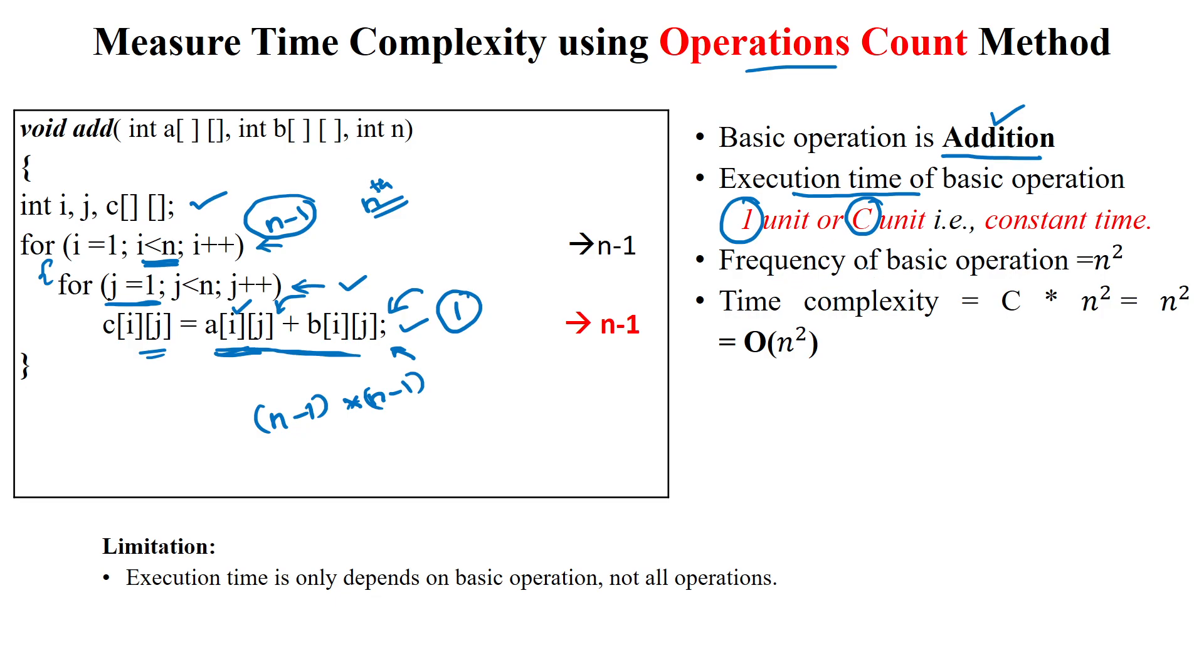We can say the frequency of the basic operation is n minus 1 into n minus 1 time. So, when you are multiplying this, you will get n square minus 2n plus 2. So, here, what is the higher order term? The higher order term is n square, then lower order terms are 2n plus 2.